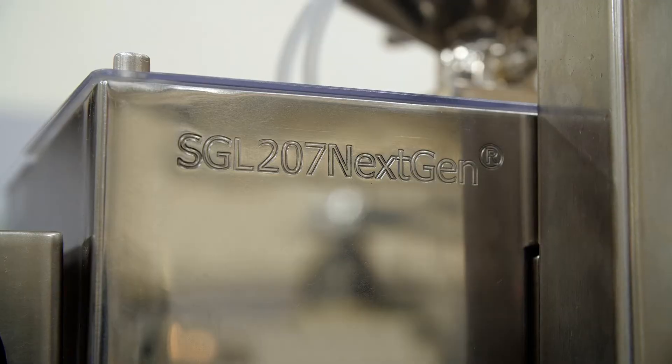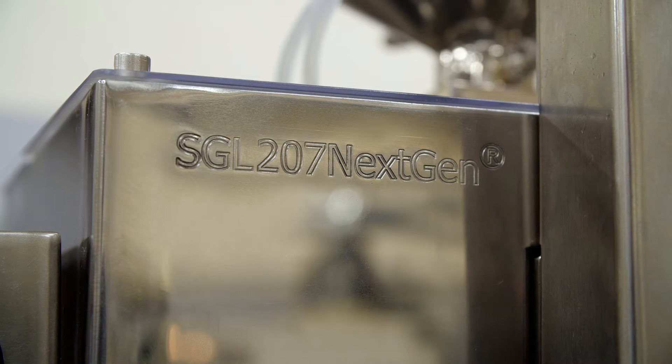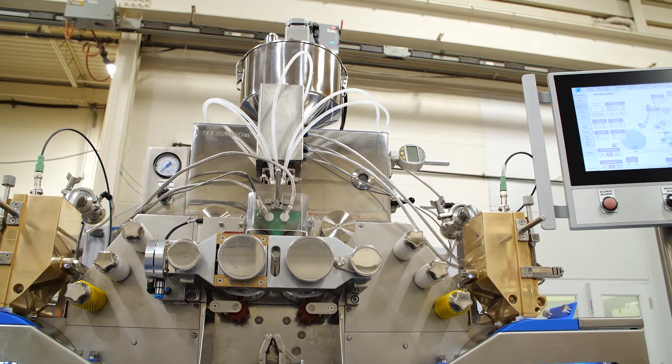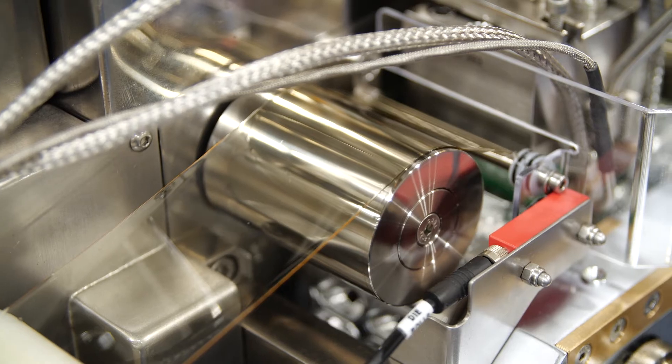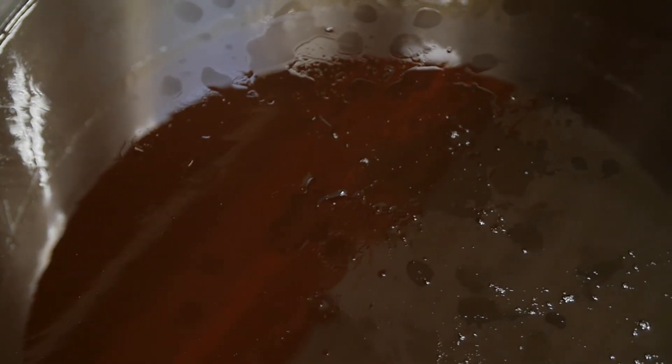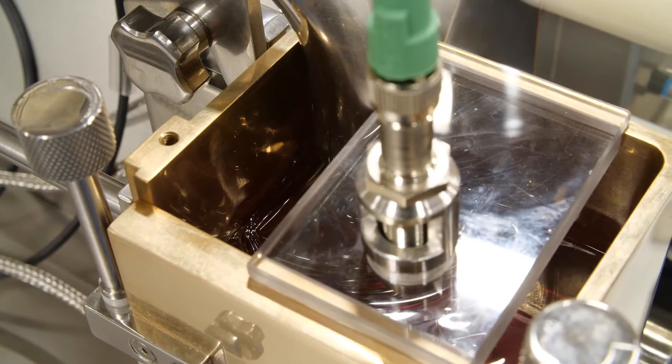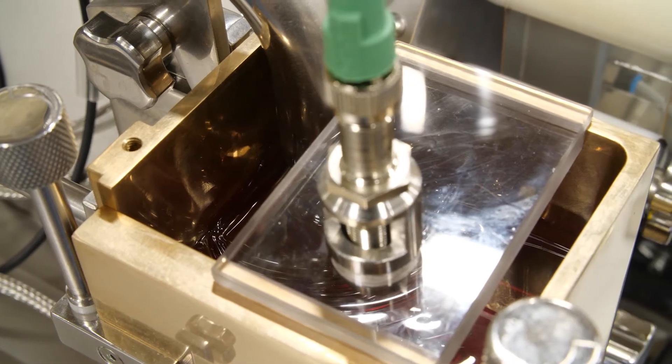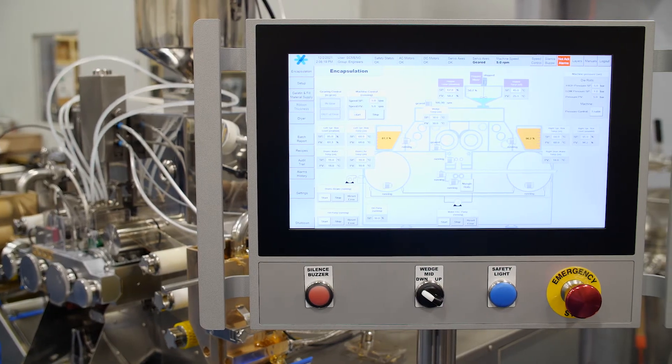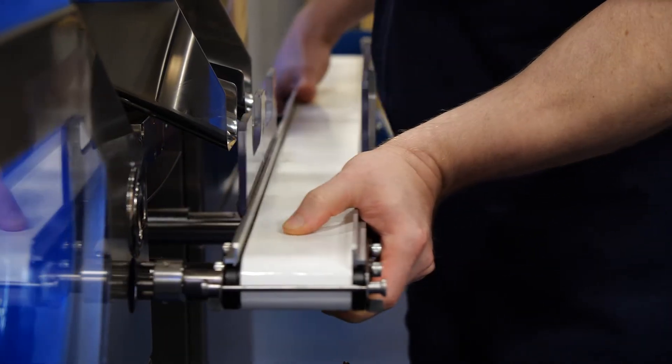In combination with the SGL207 NextGen, TechnoFAR can also supply the complete production line, consisting of continuous drying, gelatin preparation, pressurized holding receivers for gelatin and medicine, in-process control systems, installation, training, and start-up and documentation.